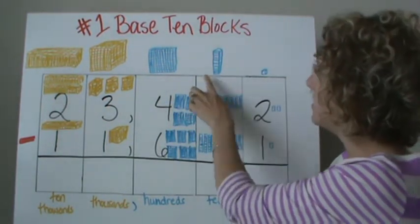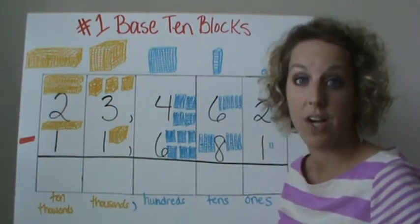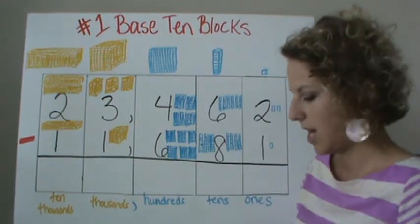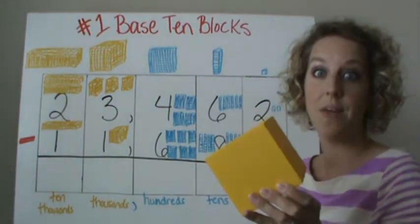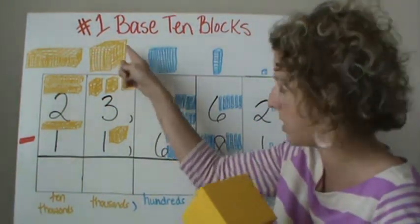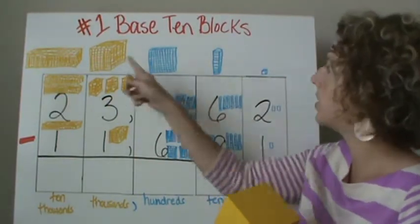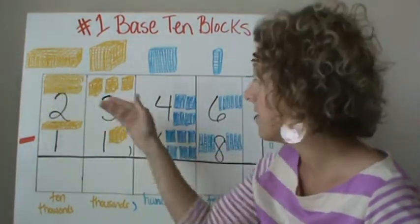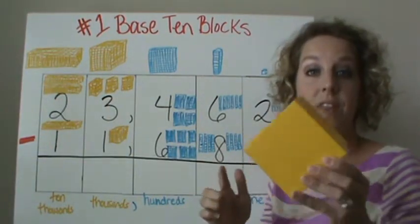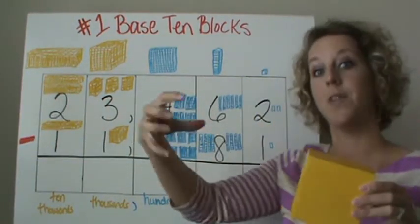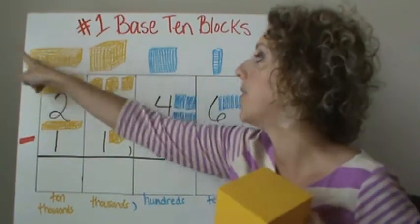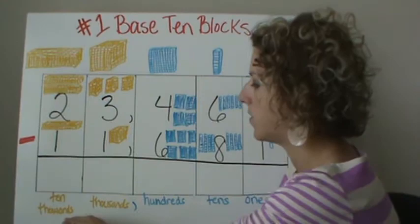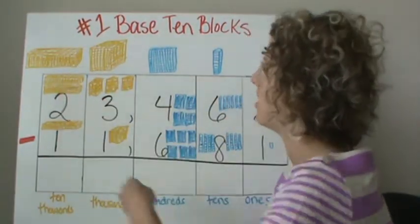Again, we have ones, tens, hundreds. Then it gets even bigger. If we take ten of these and glue them all together, you're going to end up with the big one — the huge cube. And even further, if we take ten of these cubes and glue them all together, you'll have your ten thousands place. So you have your ones, your tens, your hundreds, your thousands, and your ten thousands.